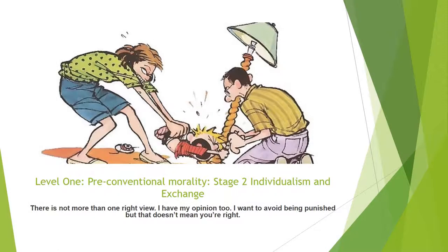Level 1, pre-conventional morality, Stage 2 is individualism and exchange. There's more than one right view — I have my opinion too. I want to avoid being punished, but that doesn't mean you're right.